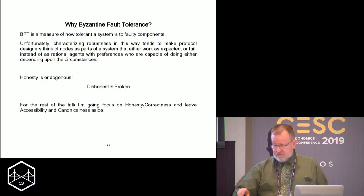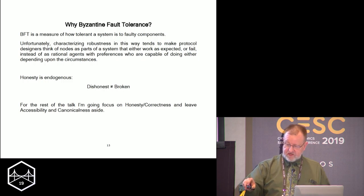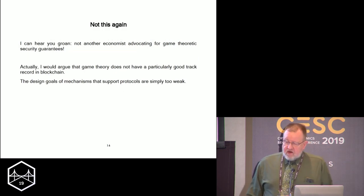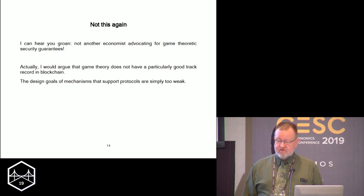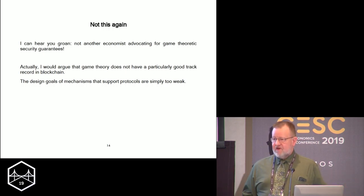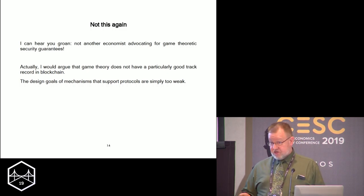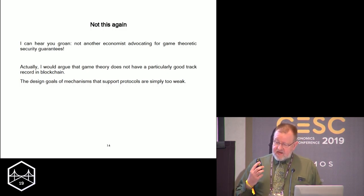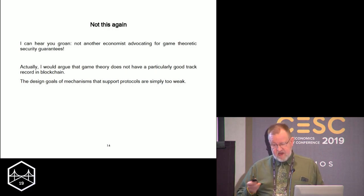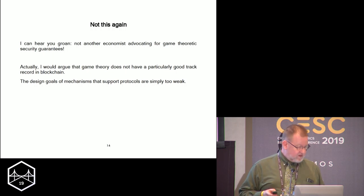For the rest of the talk I'm going to focus on the notion of honesty and correctness and leave the harder questions of canonicalness and accessibility. If you've been at talks like this before, you're thinking: another economist saying we need a game-theoretic guarantee of security. Actually, I would say economists haven't done an especially good job in this space. Game theory in particular hasn't really been used in a way that I think is convincing here, because the design goals of mechanism design economists are really not strong enough — the ambition is too weak.